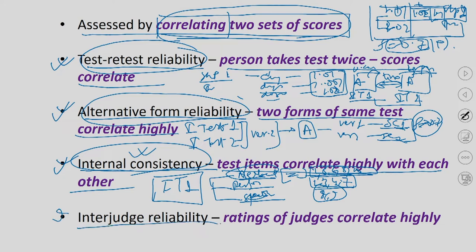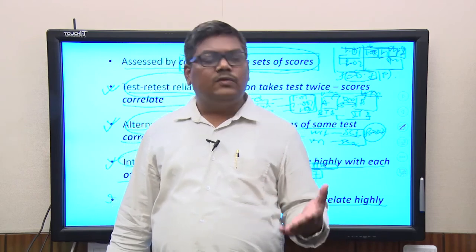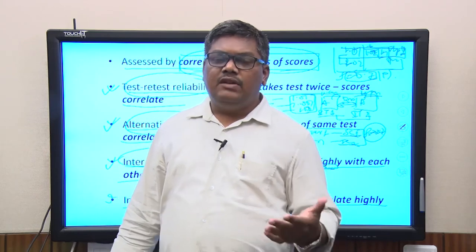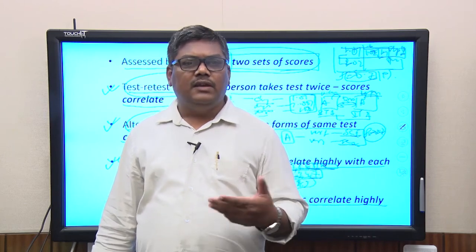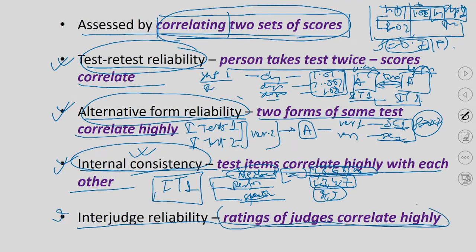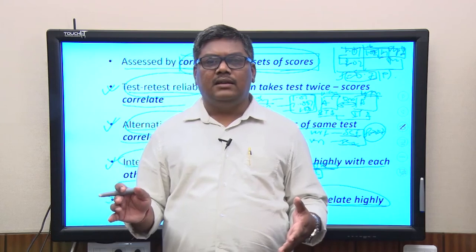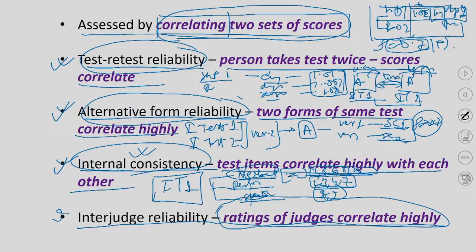The last kind of reliability is called inter-judge reliability, where the ratings of judges correlate highly. There are certain factors which cannot be measured through a computer test — for example, beauty or singing. Here we call in expert judges, who have their own baseline and give grades to people. If 3 out of 4 judges give the same score to a person in a beauty contest, the contest is said to have inter-judge reliability.